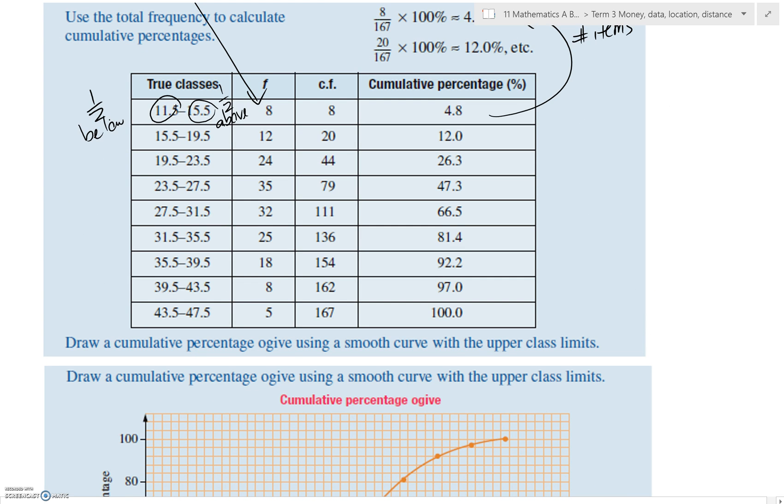Now using this information to make a percentage ogive. So you're going to use the cumulative percentage column as well as the upper class limit. So that's what we're going to plot this. Plot here.